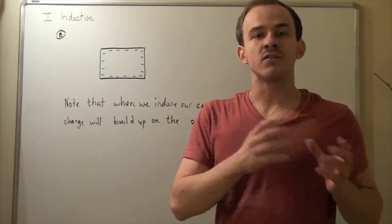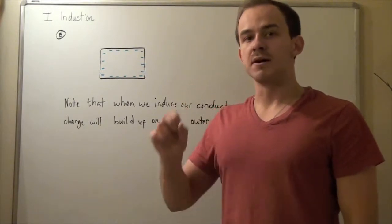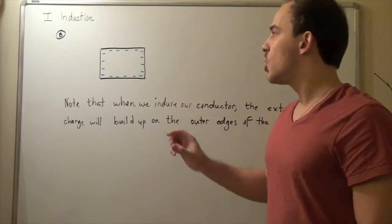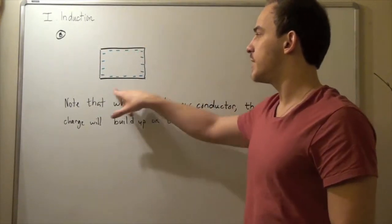That's because the extra negative charge will repel. Remember, negative and negative repel according to Coulomb's law. That means the most optimum distance between any two charges will be achieved when they're at the surface of our conductor, like this picture shown here.